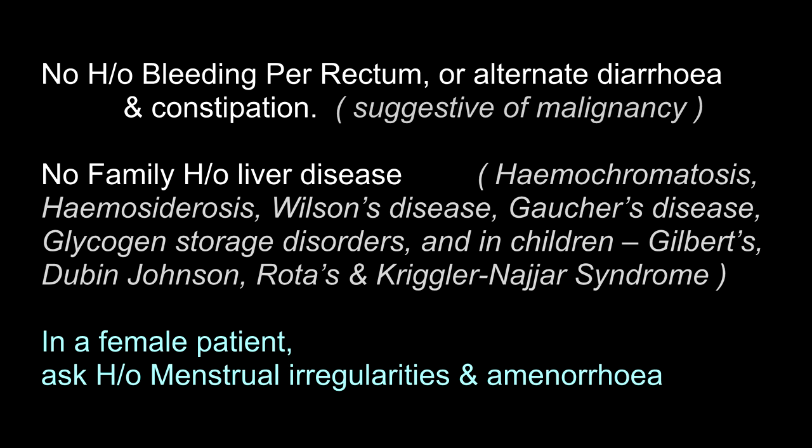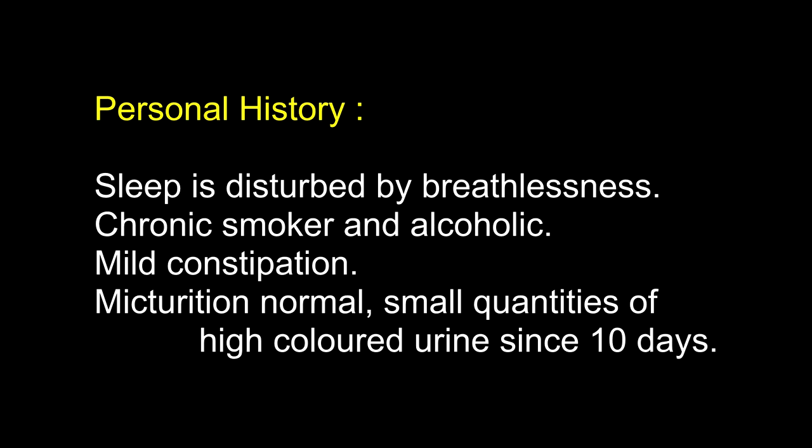Liver cell dysfunction will also affect aldosterone metabolism, resulting in increased levels of aldosterone and sodium retention. Personal history: sleep is disturbed by breathlessness. Alteration of sleep rhythm in a patient with ascites may indicate an onset of hepatic encephalopathy. Hepatic encephalopathy is a term for the CNS changes that occur due to increased ammonia levels in systemic circulation, leading to depression of neuronal activity. In a failing liver, ammonia enters systemic circulation through porta-caval shunts, resulting in synthesis of false neurotransmitters like octopamine, which are responsible for hepatic encephalopathy.